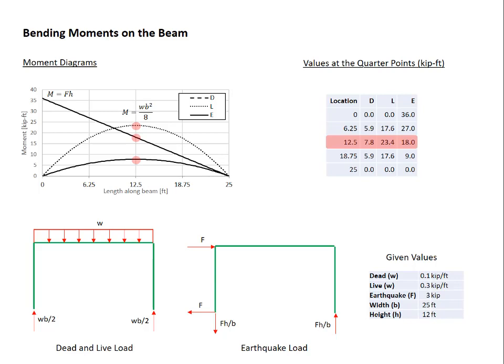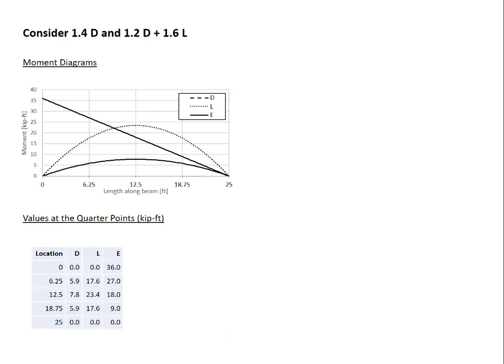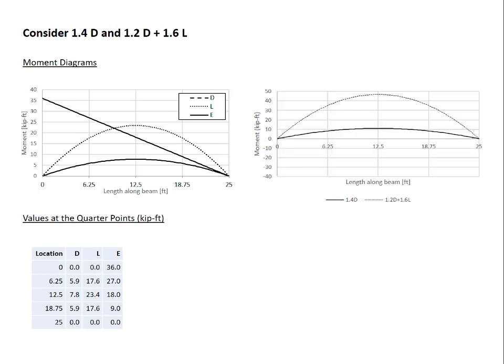Let's get started with the calculation. We'll do this over several different steps. We'll start by considering the load combinations 1.4 dead and 1.2 dead plus 1.6 live. On the left hand side is information that was already given: the moment diagrams and the values at the quarter points. If I apply my load combinations, I arrive at the following moment diagrams.